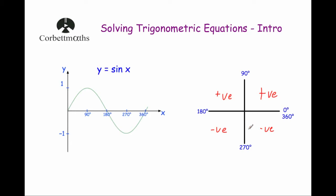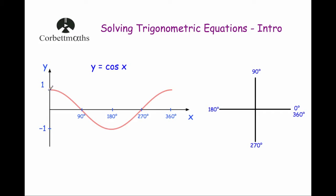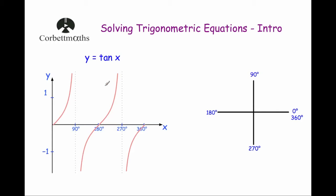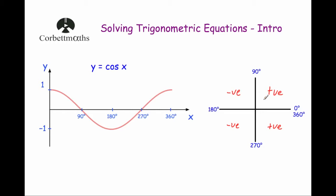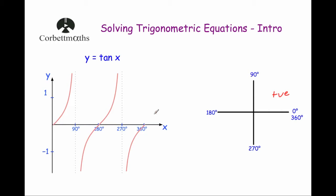Now let's look at the cos graph, y equals cos x. Between 0 and 90 degrees, cos values are positive. Between 90 and 180 degrees, they're negative. Between 180 and 270, they're negative. And for angles between 270 and 360, the cos of those angles will be positive. For the tan graph, y equals tan x: between 0 and 90 degrees, tan values are positive (noting 90 is an asymptote). Angles between 90 and 180 are negative for tan. Between 180 and 270 are positive for tan. And between 270 and 360, they're negative for tan.